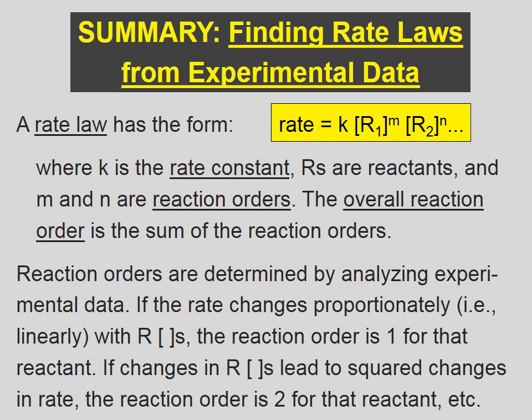Let's summarize. A rate law has the form rate is equal to K times one reactant concentration to some power, the other reactant concentration to some power, for however many reactants you have. Where K is the rate constant,